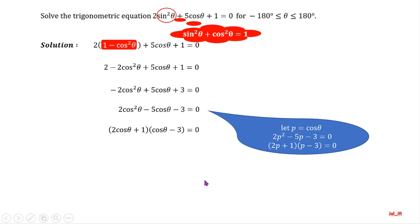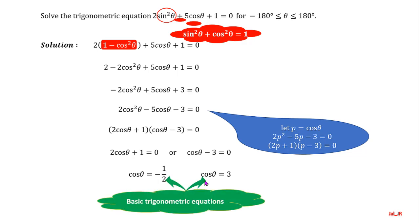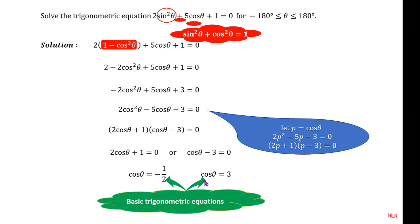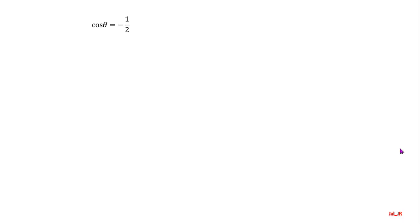The solution for the quadratic equation is cosine of theta equal to negative 1 over 2, or cosine of theta equal to 3. These are not the final solutions. We have basic trigonometric equations that we need to solve to find theta. We will solve the equations one by one.